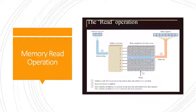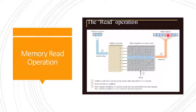Let us see the steps carried out during a read operation. First, it places the address of the location to be read on the address bus. Next, it activates the memory read control signal on the control bus. After control signals are activated, it waits for the memory to retrieve the data from the address location. After that, it reads the data from the data bus. Once the data is read, it drops the memory read control signal to terminate the read cycle.